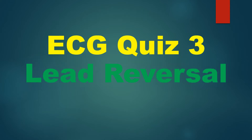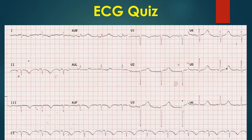Discussion on an ECG abnormality due to lead reversal. At one look, it appears like an evolved inferior wall myocardial infarction. But on close scrutiny, the inverted P-waves in lead 1 and inferior leads catch your attention.